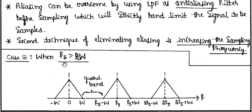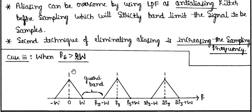You might ask: what if you set the sampling frequency to 10 or 20 times W? While there is no fundamental problem, setting an excessively high sampling frequency increases the guard band — meaning the unutilized frequency range grows — which can cause practical problems. Therefore, the minimum sampling frequency should be set to 2W, and for practical use, slightly above that for easy signal recovery.